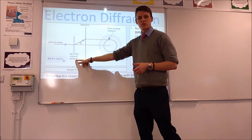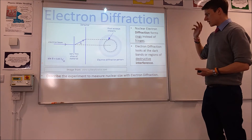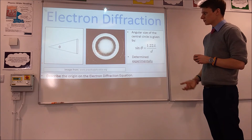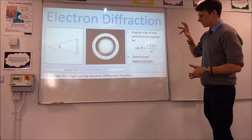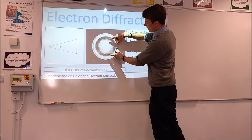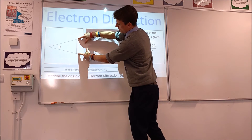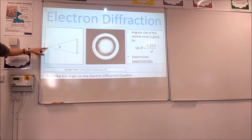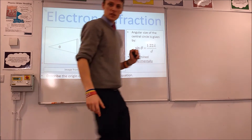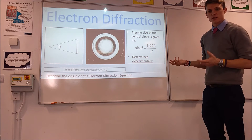Just like with the gold foil experiment with alpha scattering, you need a very thin slice of the material so you don't get multiple scatterings. In terms of where the equation you can see at the bottom left comes from — this equation was first experimentally determined by looking at the angular size of the central part. The width of your central ring corresponds to this size, and this is where your detector is to take the measurement. The angular size is this angle, and from the experiment you found this relationship between these variables — so this is an experimentally determined relationship.